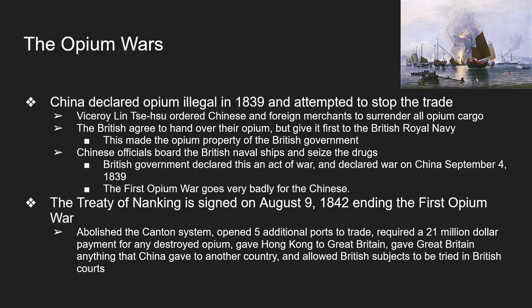This war between Britain and China became known as the First Opium War. It did not go very well for the Chinese, who were clearly no match for the British Navy. By August 9th, 1842, the war ended. The Chinese were forced to accept British demands and signed a treaty in which they were treated as unequals.